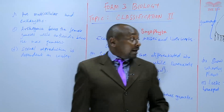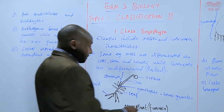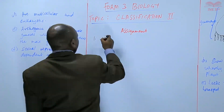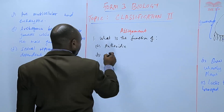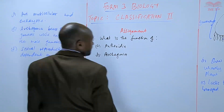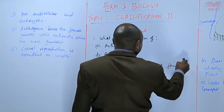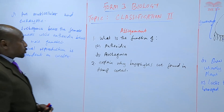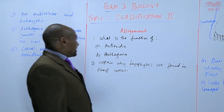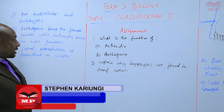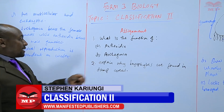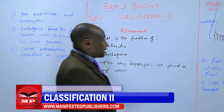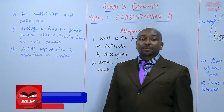So we are going to stop there, and then we'll have an assignment on the same. The first question: what is the function of A, the antheridium, and B, the archigonia? And number two: explain why bryophytes are found in damp areas. Until next time, goodbye.